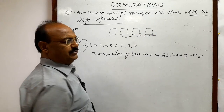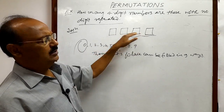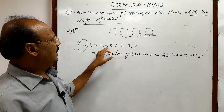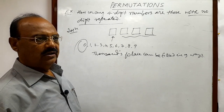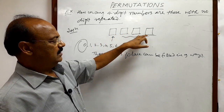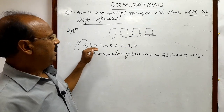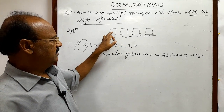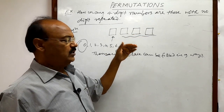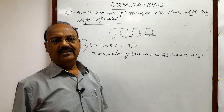Now we have three places left that have to be filled. Zero can be placed anywhere in these three places, there will be no problem. But with the condition of no digit repeated, if one digit has been placed at the thousands place, the number of remaining digits will be nine. So the hundreds place, tens place, and units place can be filled with any of these nine digits. We need to select three digits out of nine, which is 9P3.